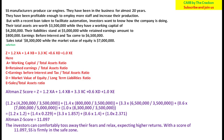With a Z-Score of 11.097, we compare this against the standard range to assess the company's performance and credibility. This score indicates the company is doing very well and is profitable, meaning investors need not worry — they are likely to get higher returns. SS firm is in a very safe zone.